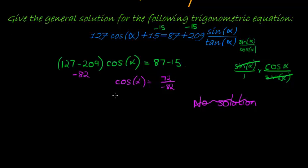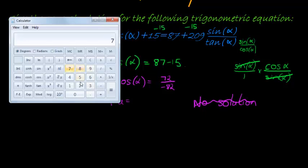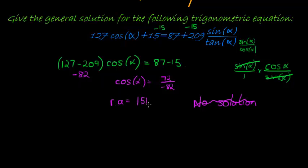Which means our next step is to find our reference angle, which is 72 divided by 82, is negative. It should have a negative, actually, because we're dividing with a negative 82. Negative 0.878. Our reference angle is taking the arc cos of that, giving us 151.41 degrees.